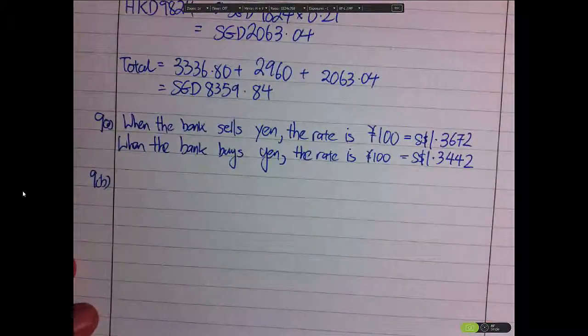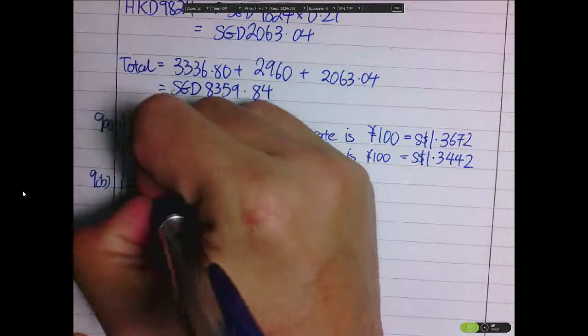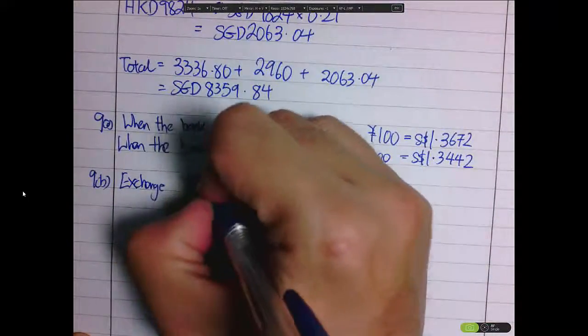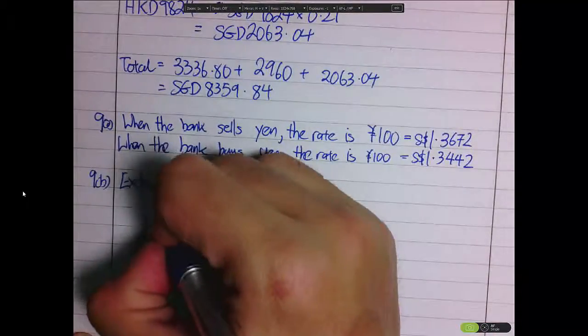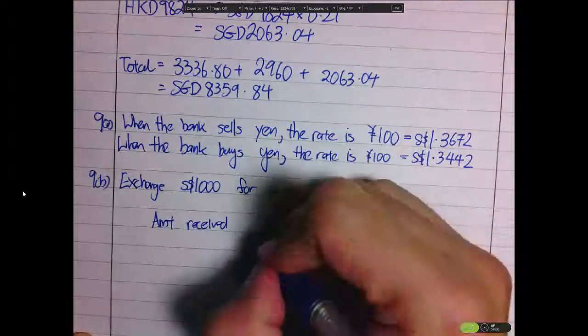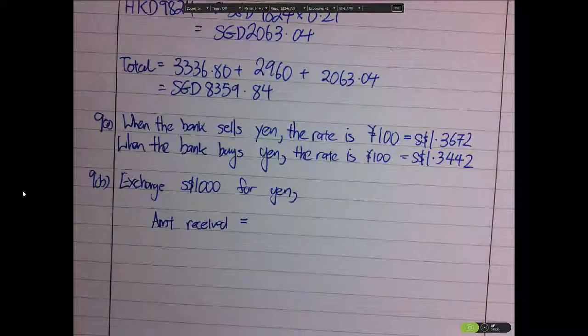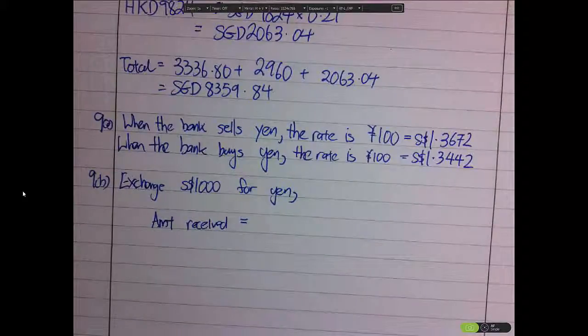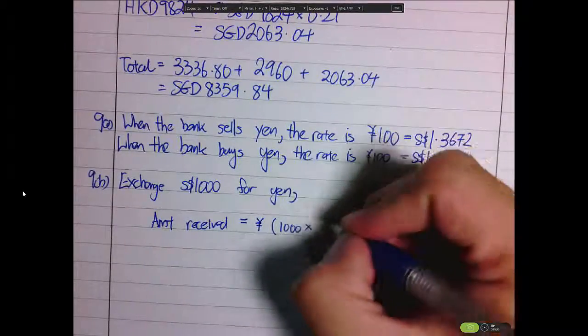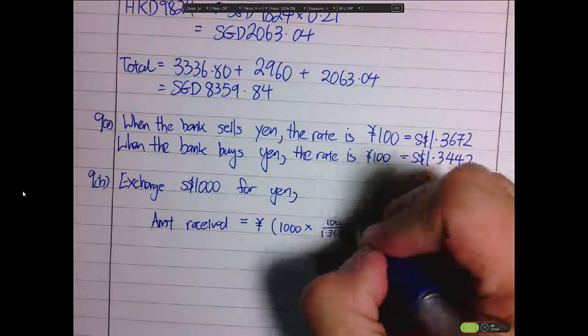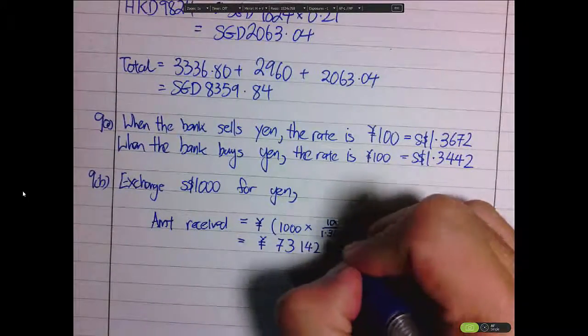First and foremost, first the bank sells Yen to you. So first you exchange Singapore $1,000 for Japanese Yen. The amount you receive is equal to 1,000 times 100 over 1.3672. So the amount you receive is 73,142.19 Yen.